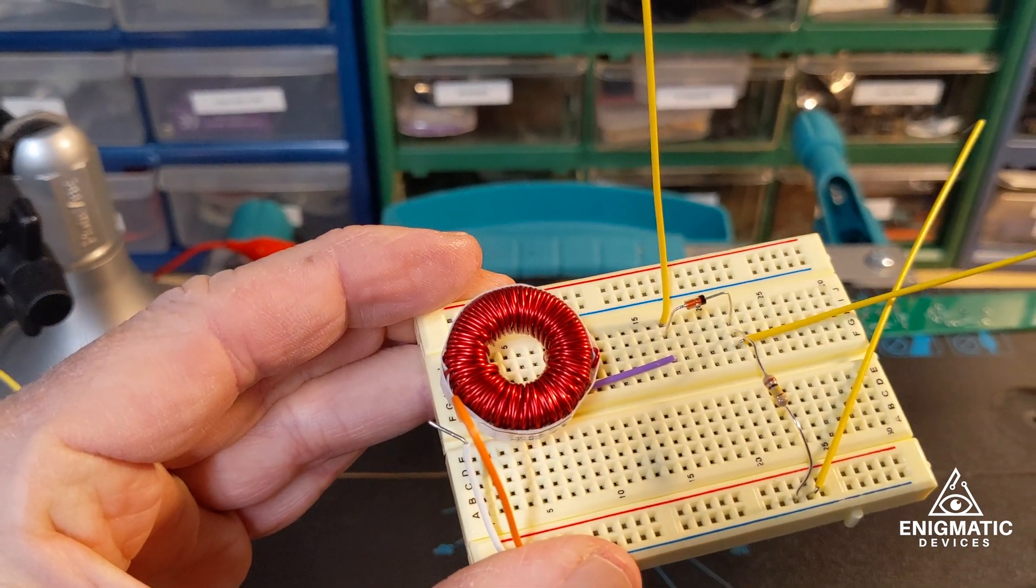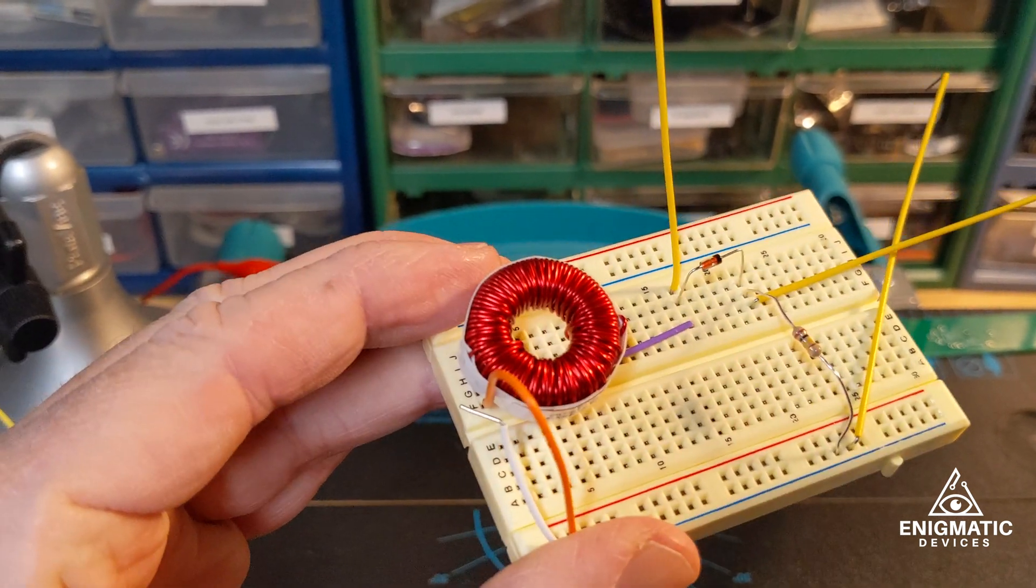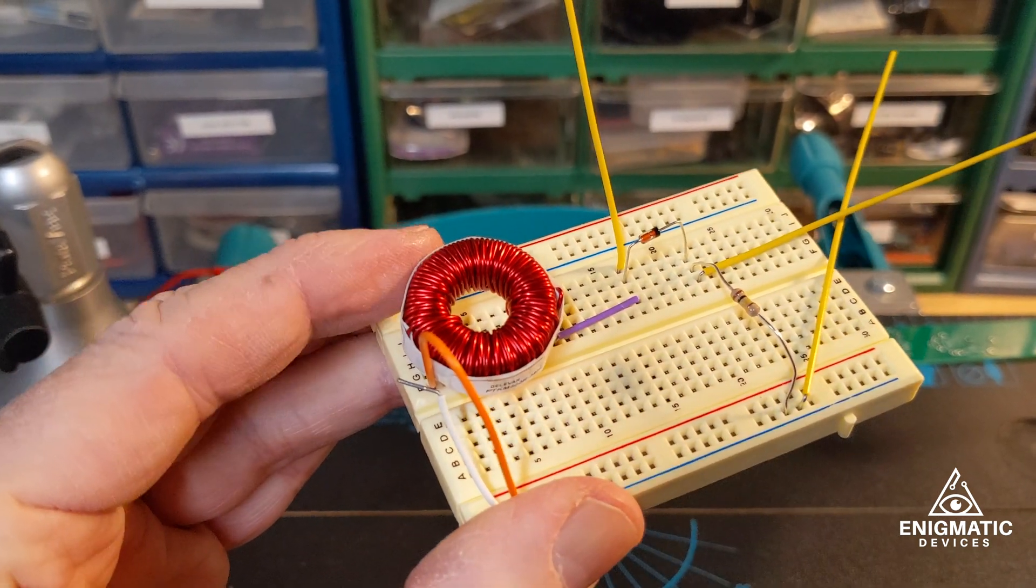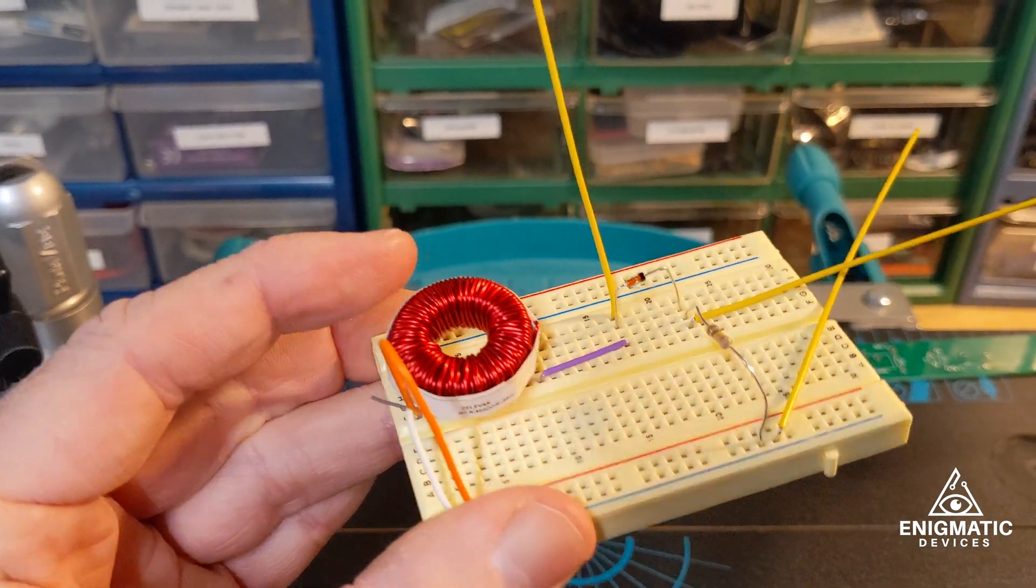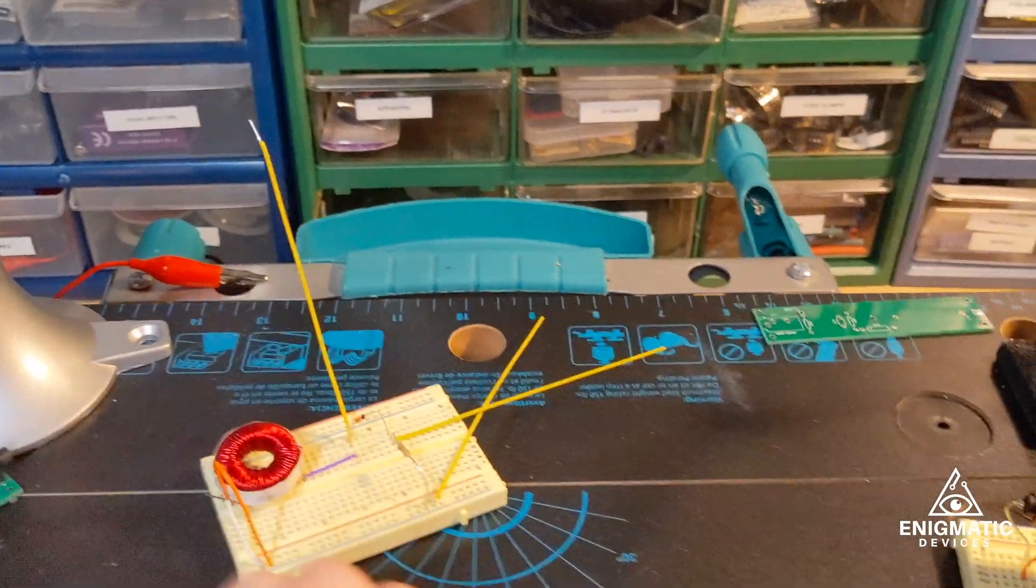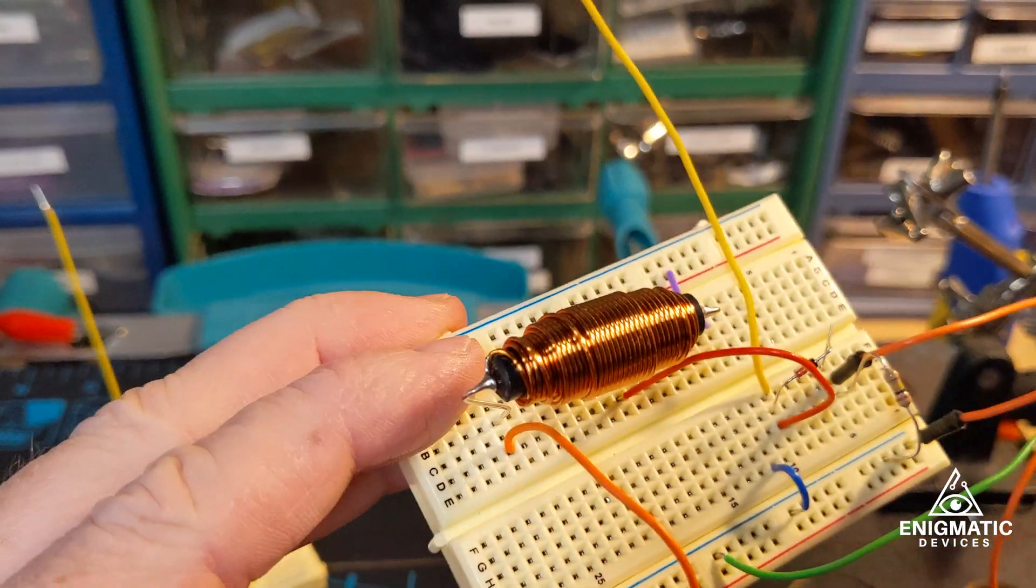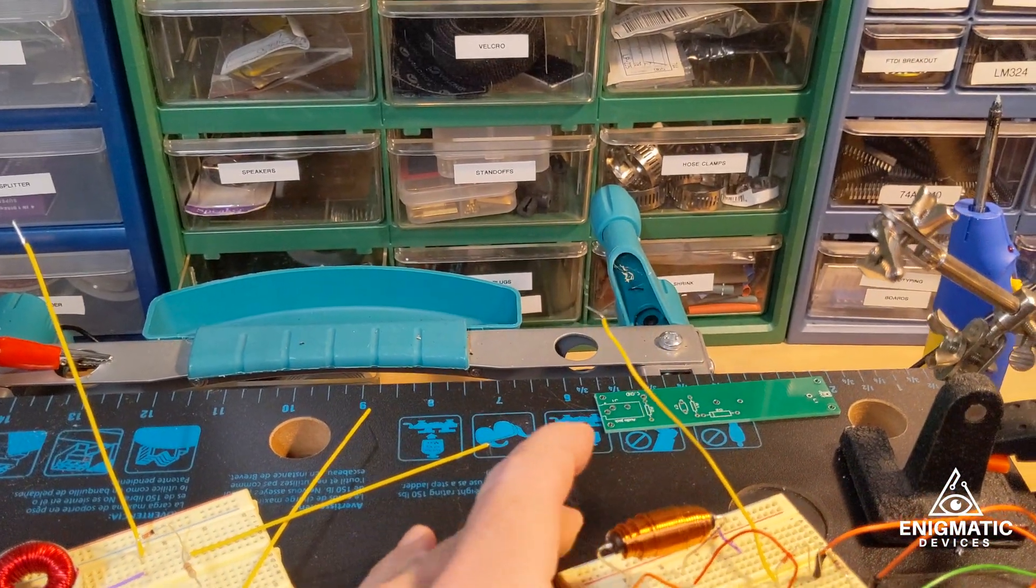In this case, this is a ferrite core toroidal type inductor. All the inductors are 500 microhenries. That's what was specified in the schematic. This one, I have one that's sort of an axial version. It does the same thing, right?